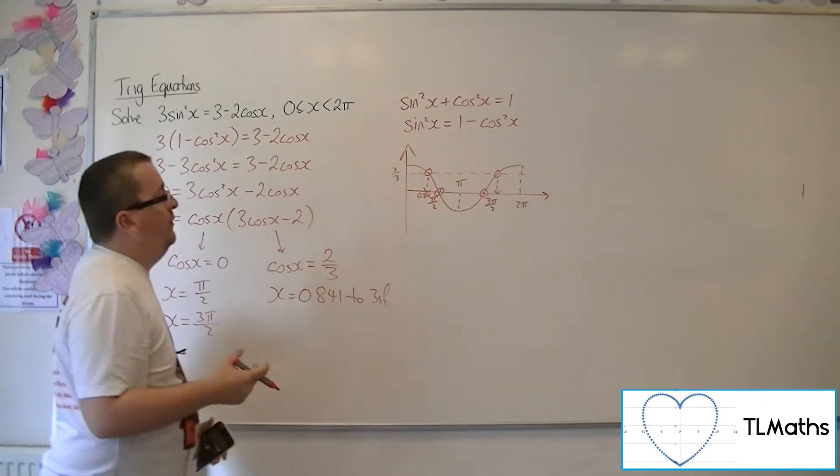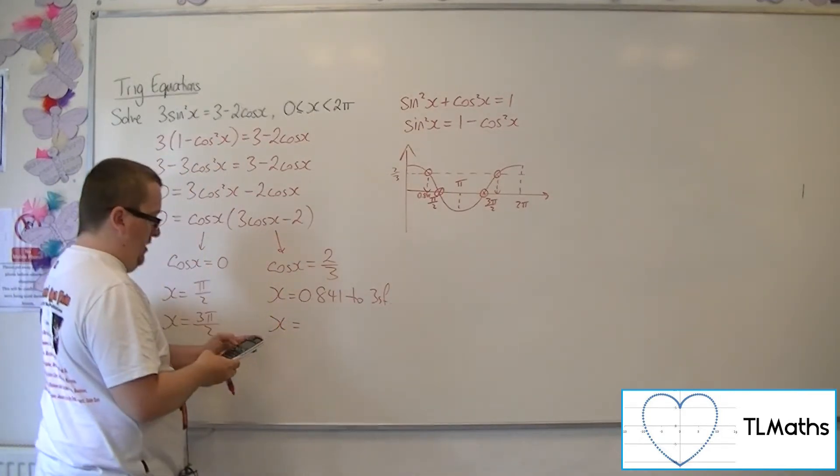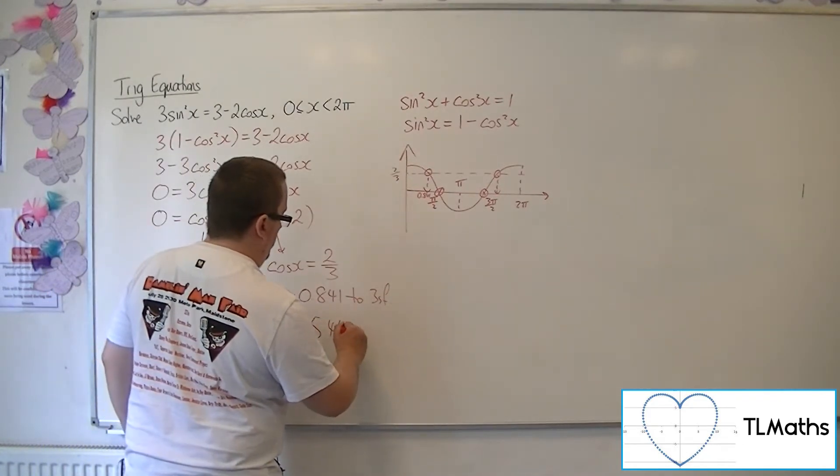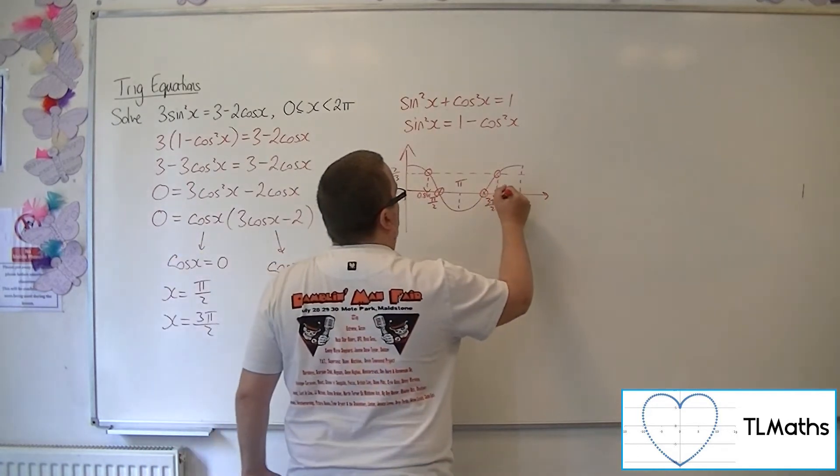And then the second solution is 0.841 away from the 2 pi. So 2 times pi, take away that answer, is 5.44 to 3 sig fig.